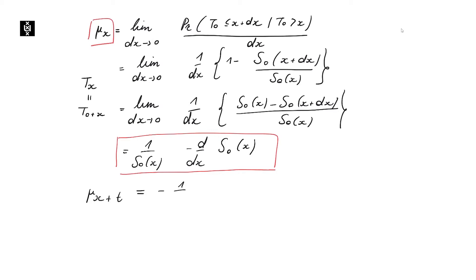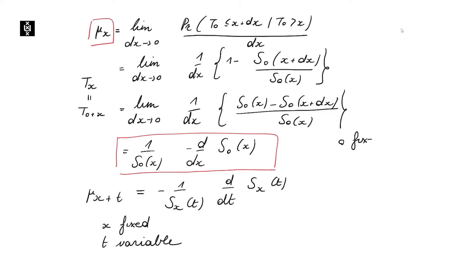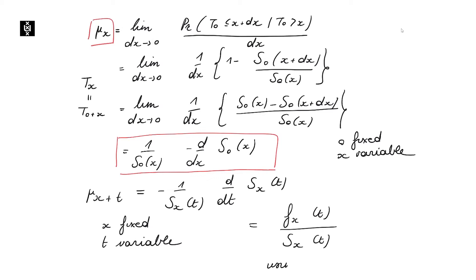For this case we find an equivalent definition, where X is fixed and T is variable — whereas before, zero was fixed and X was the variable changing over time. By using the connection between the probability density function of the random variable TX and the survival function, we find that this force of mortality can also be written using the density function as the negative derivative of the survival function.